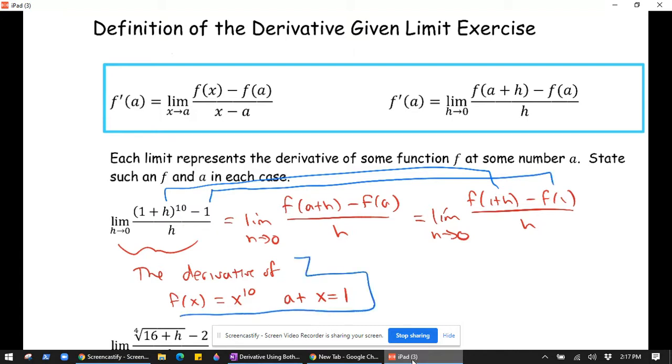So let's see, based on what we noted here, let's check if that's true. So f of 1 plus h, if we're saying that f of x is x to the tenth, well, it's just 1 plus h to the tenth. So that one worked. And the other thing we'd want to check is that f of 1 is equal to 1, but f of 1 is just 1 to the tenth according to what we wrote. So that checks out too. So it's the derivative of f of x equals x to the tenth evaluated at x equals 1.